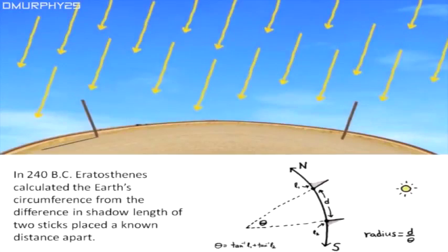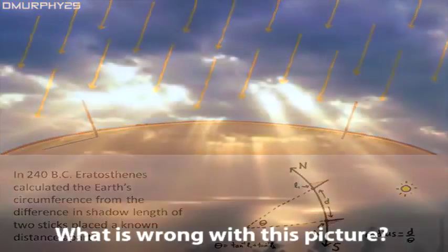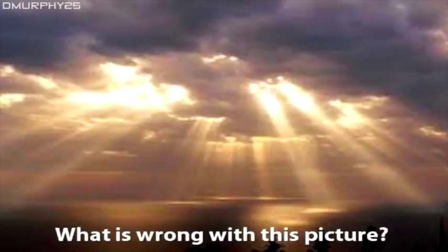Eratosthenes' calculation of the Earth's circumference is dependent on the light from the Sun being parallel, as it should be if the Sun is 93 million miles away. But anyone can go out on a sunny day with broken cloud and see that the light that arrives on the Earth is not parallel.